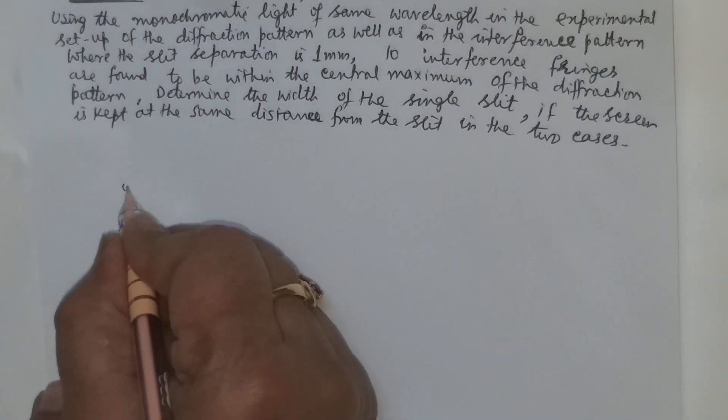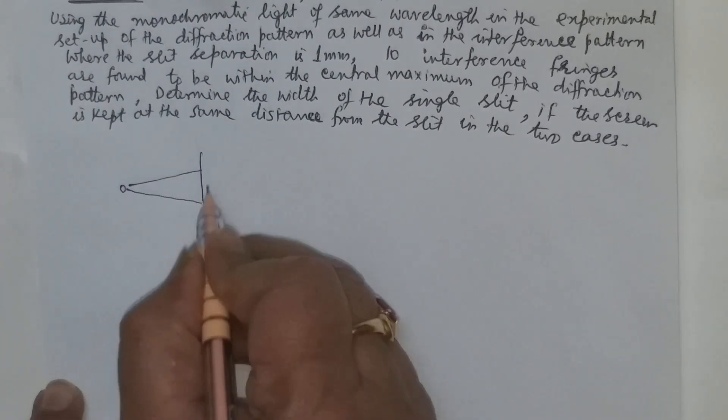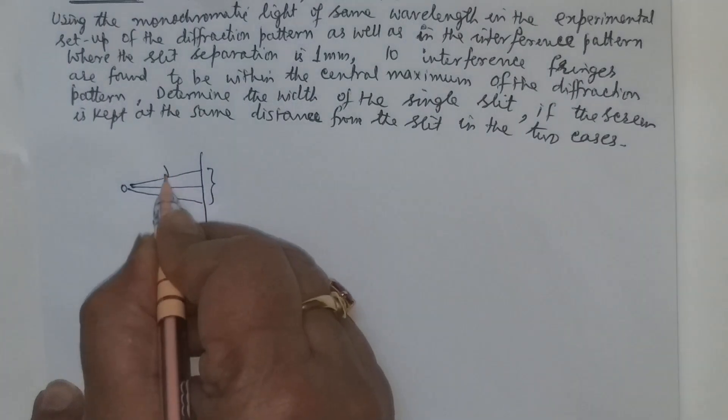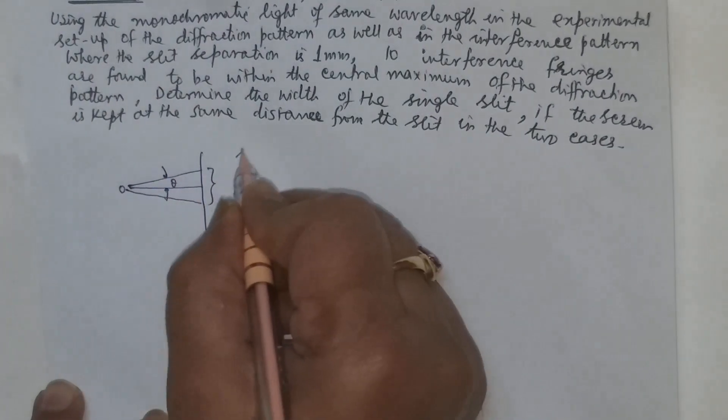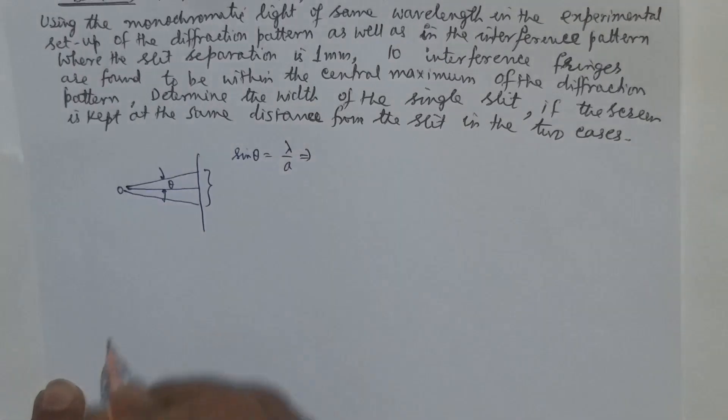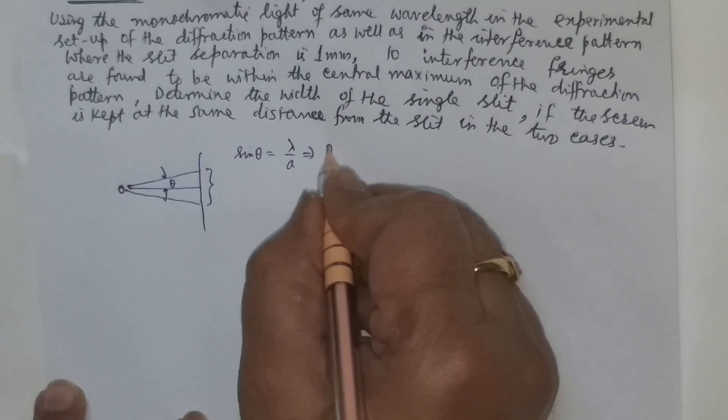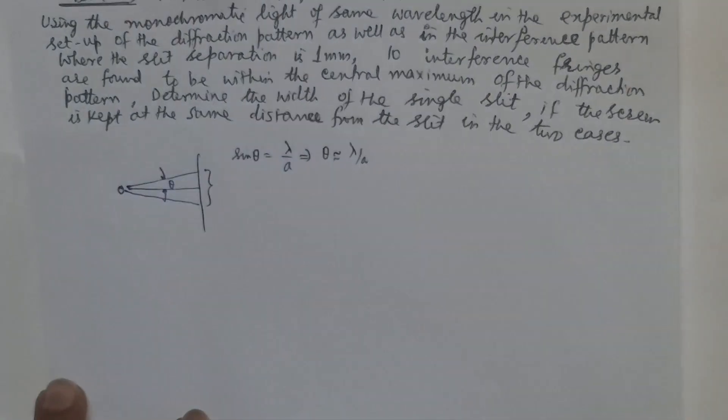This is a single slit experiment and we know that this is the central maximum in the diffraction pattern. If this angle is theta we know that sine theta is equal to lambda by a where a is the size of each slit. As theta is very small, theta is equal to lambda by a.